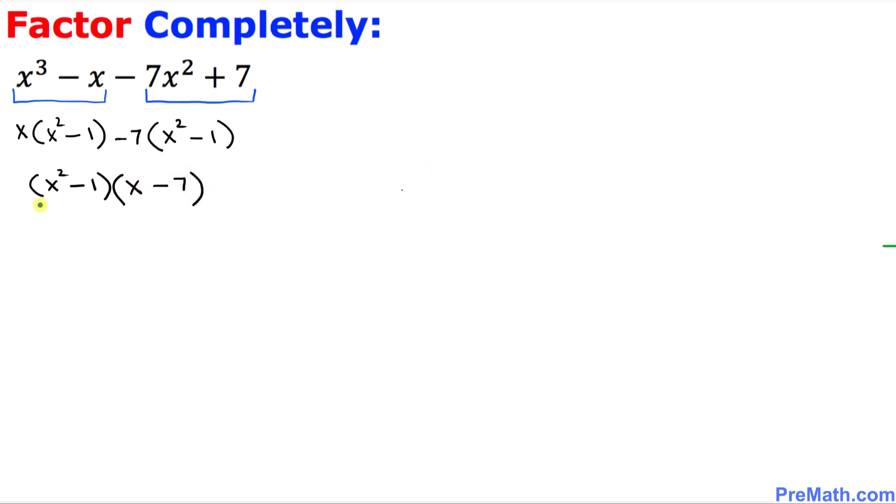And now in our next step, x squared minus 1 in the very first parenthesis, this 1 could be written as 1 squared. So x squared minus 1 squared, times x minus 7.